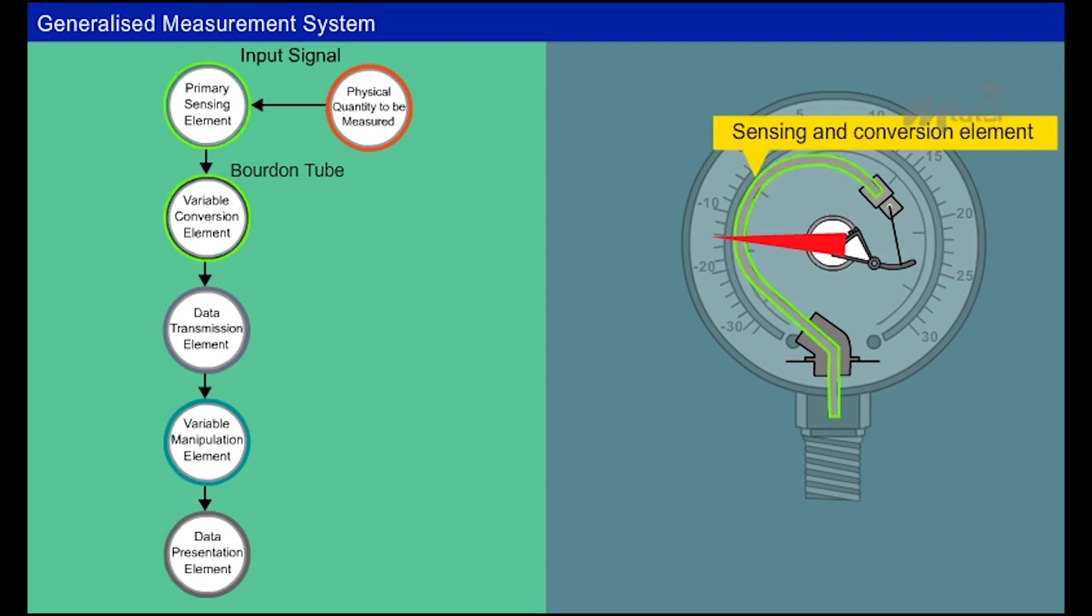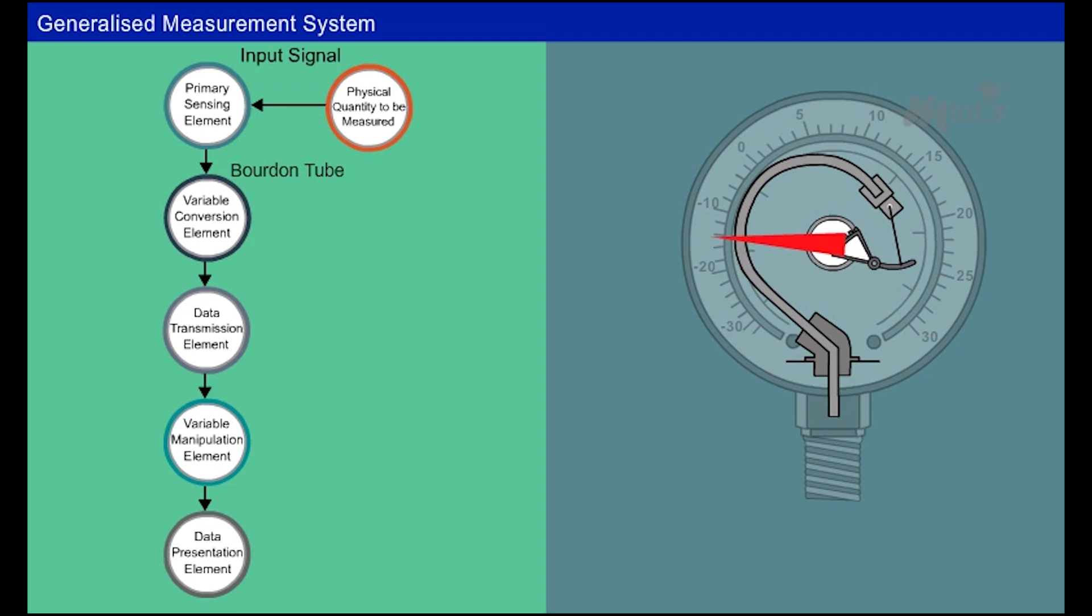The Borden tube acts as both the sensing and the conversion element. Here, the entity to be measured is the pressure. The Borden tube senses the pressure. The major function of the variable conversion element is to convert the output of the sensing element to another form. When the pressure is sensed, the closed end of the tube is slightly displaced. Here, the pressure is converted into small displacement.